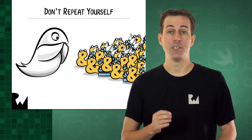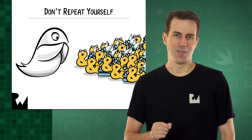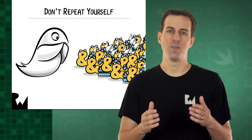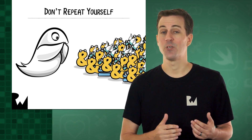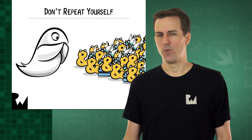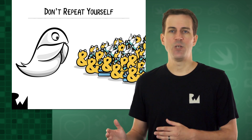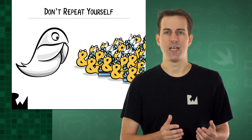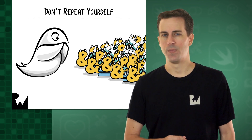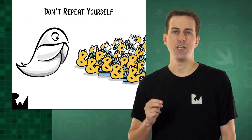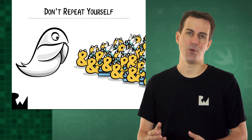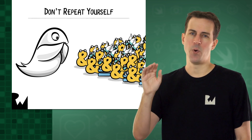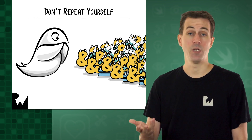The rationale behind DRY is to make code easier to read and change, and to make yourself less prone to errors when updating your code. For example, if you decided that you wanted to change the way you convert the slider's value, you'd have to change it in only one spot if you were using DRY code, instead of having to remember to fix it in both spots.